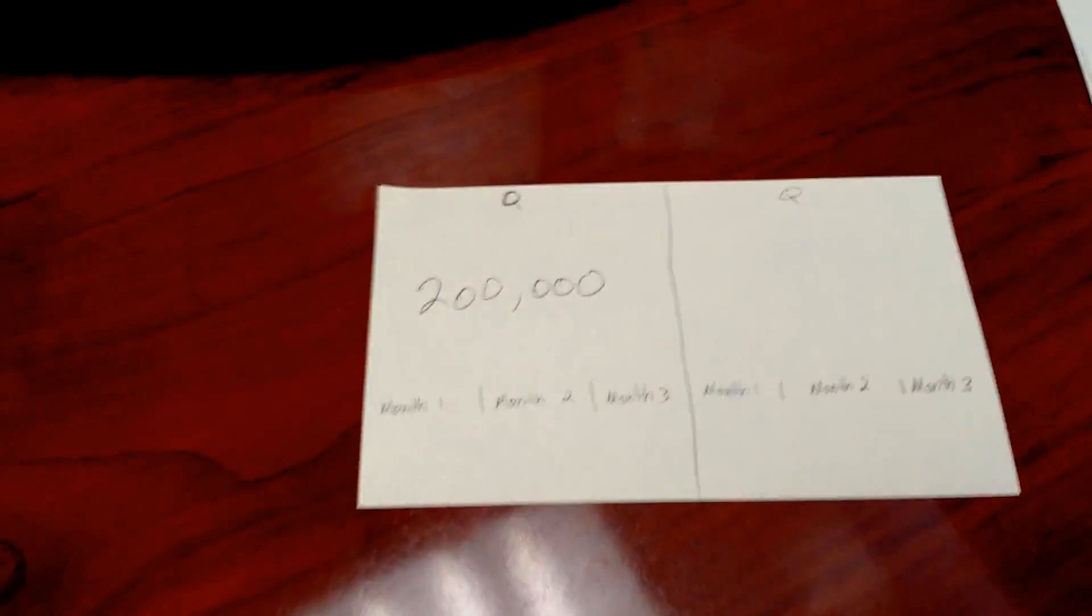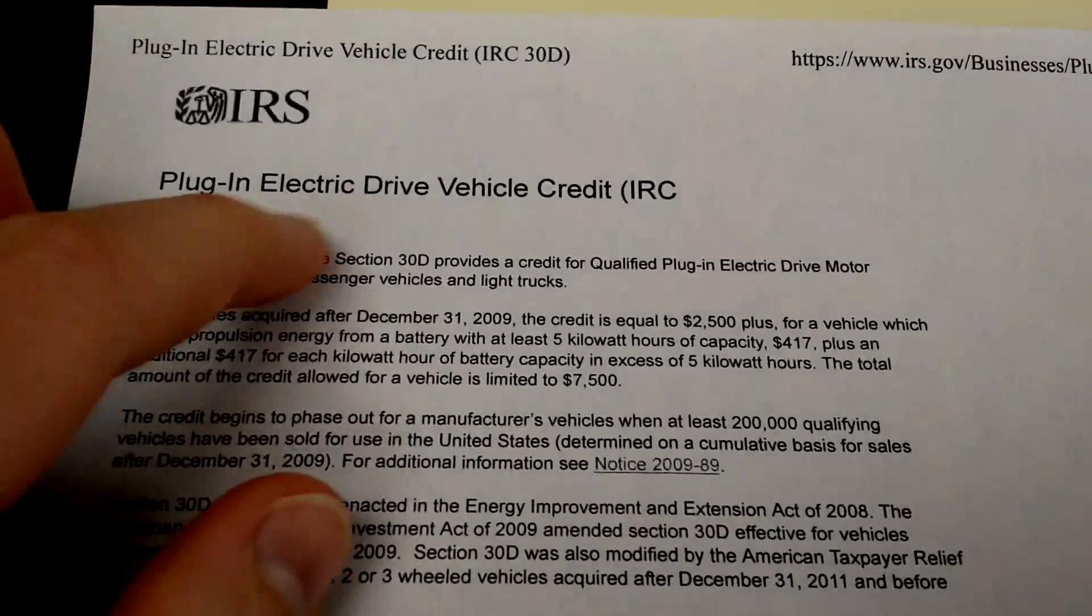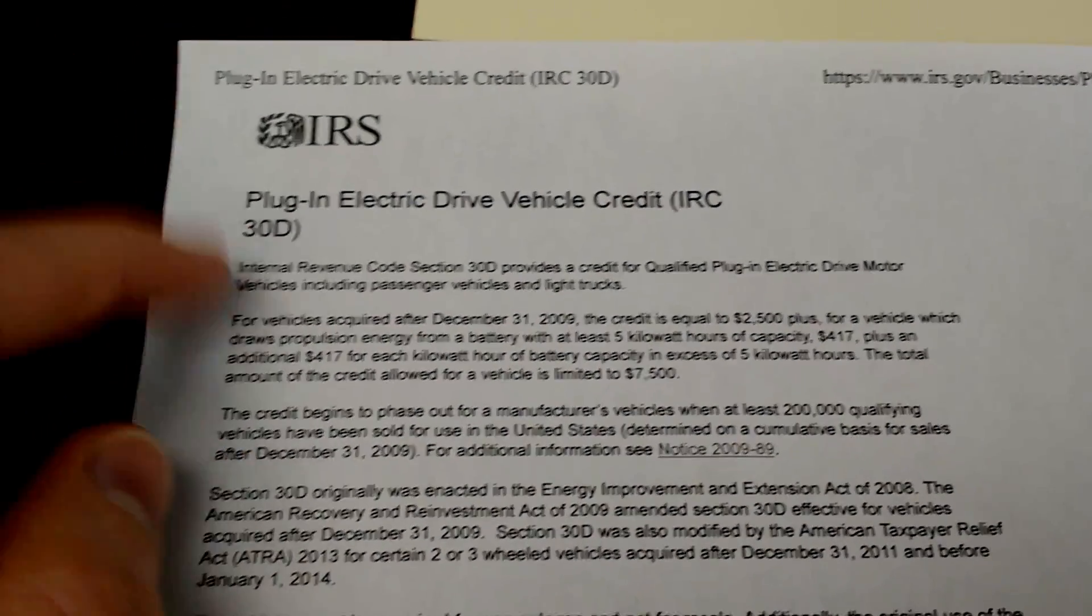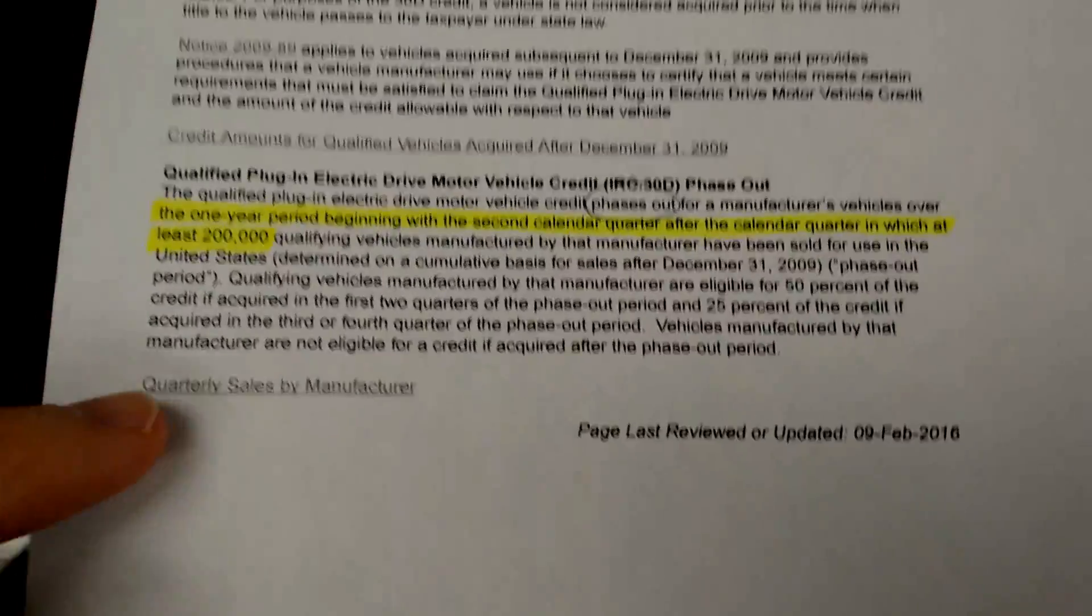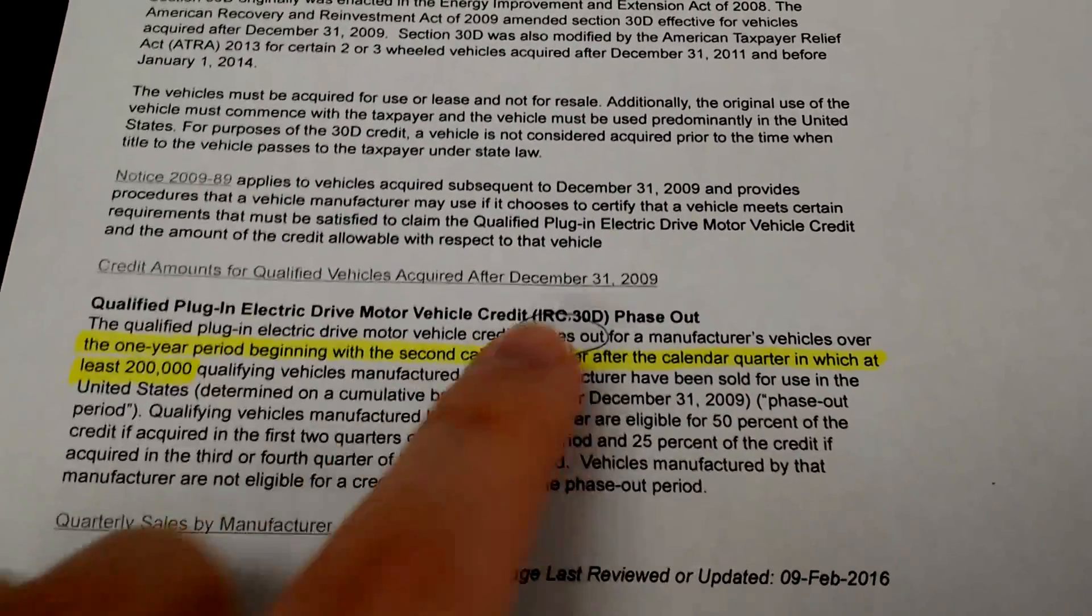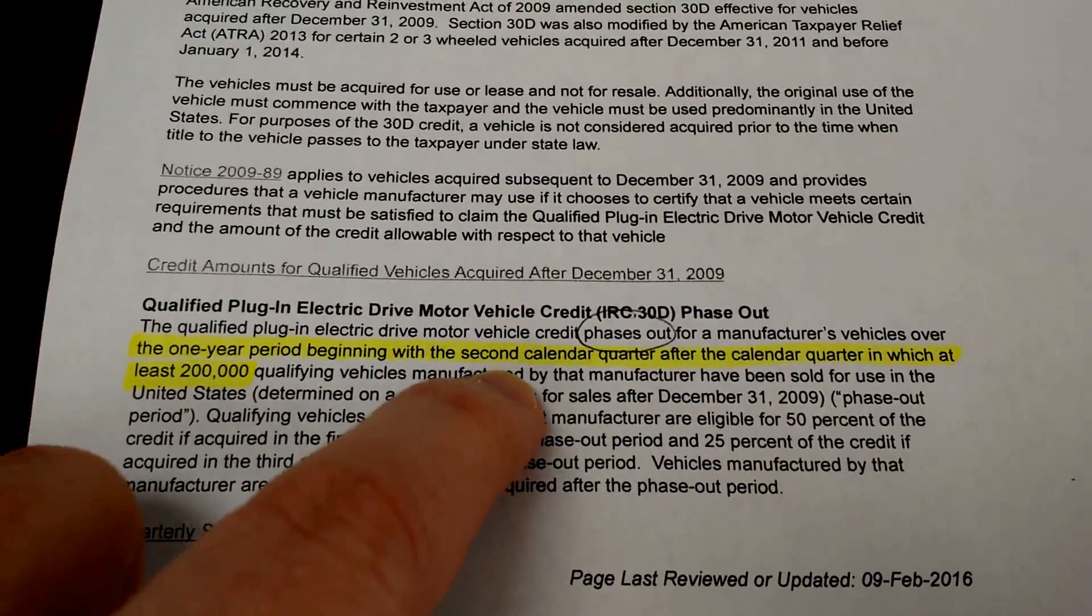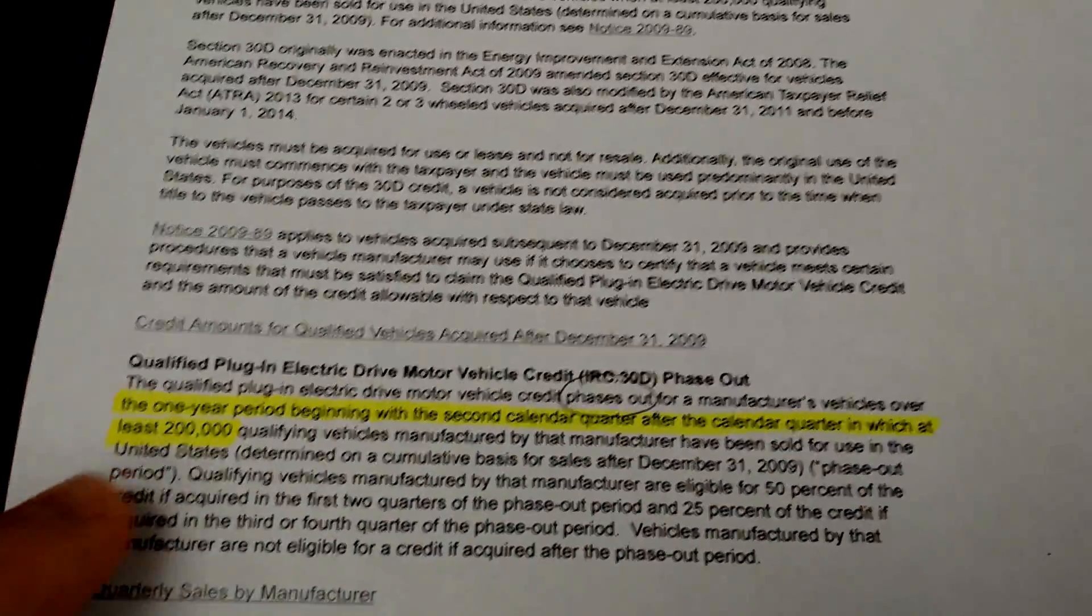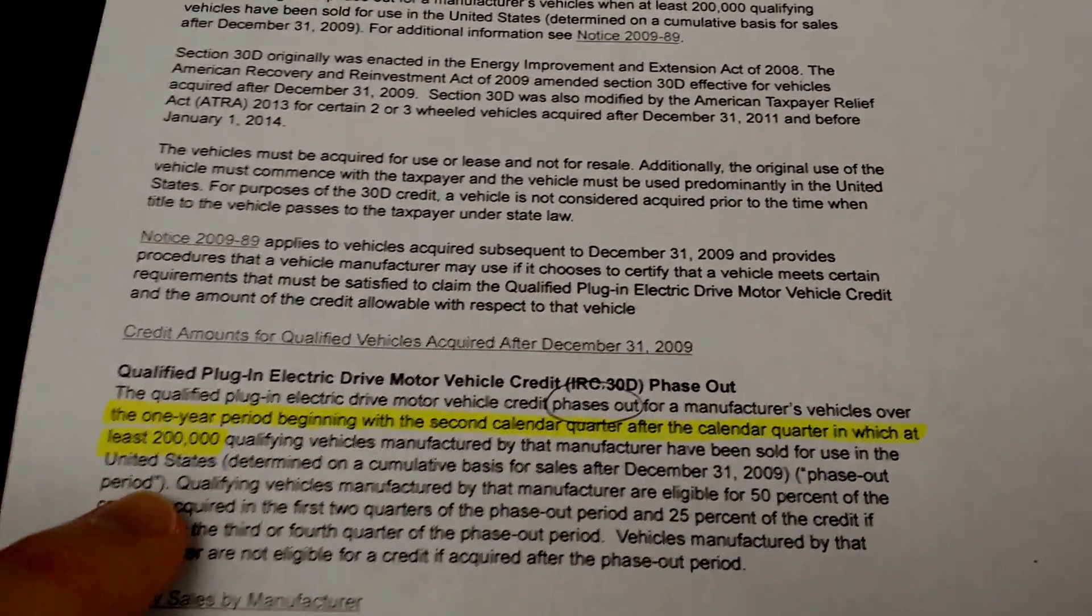Here's what happens. This is the plug-in electric drive vehicle credit 30D for IRS purposes. I'll have a link to this document in the video. The phase-out period begins in the one-year period beginning with the second calendar quarter after the calendar quarter in which at least two hundred thousand qualifying vehicles manufactured by that manufacturer have been sold for use in the United States.